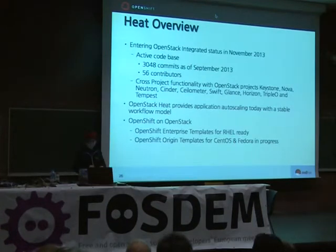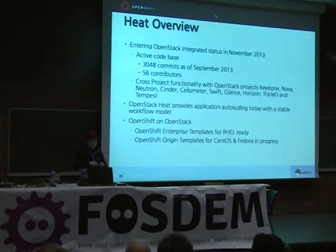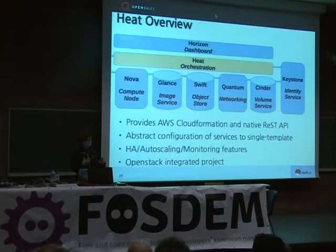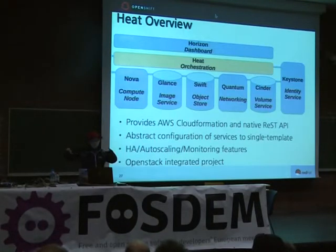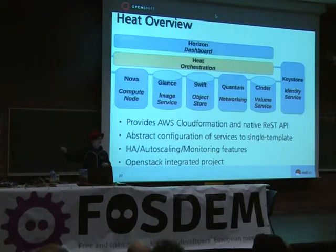Heat has been around since November 2013. It's a very active code base with lots of contributors, not just from Red Hat. This orchestration layer touches across lots of other functionalities within OpenStack and provides all the capabilities needed for auto-scaling of applications. It models itself originally over the AWS CloudFormation API and abstracts Nova, Glance, Swift, Quantum, and Cinder away from the templating mechanism, allowing us to do HA, auto-scaling, and monitoring. We use Ceilometer for monitoring OpenShift PaaS running on OpenStack. It is an accepted OpenStack integrated project.